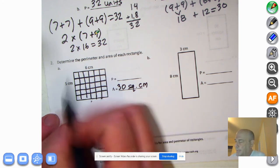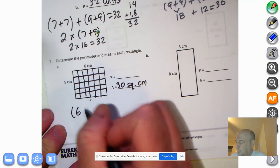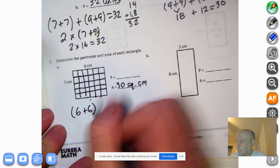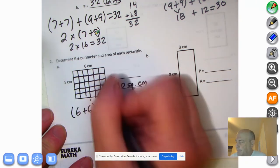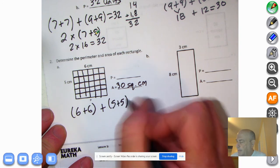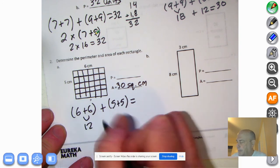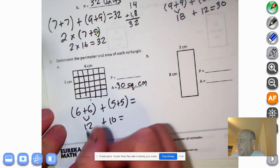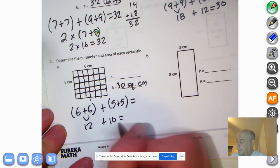Perimeter. Remember, we're walking around the outside. So you do six plus six. Right? We have six here and six here. Plus five plus five. Six plus six is 12. Five plus five is 10. 12 plus 10, 22.